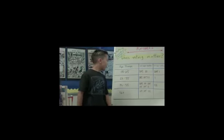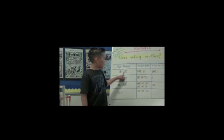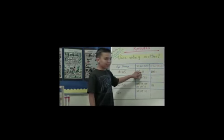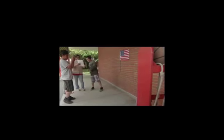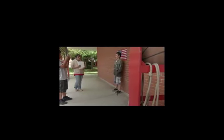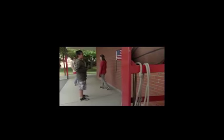Dimension three is about evaluating sources and gathering evidence to respond to the compelling question. So Gavin, would you go ahead and explain the data to us? In the age range 18 to 25, we had eight people say that voting does matter and six people say that it doesn't matter. The fourth and final dimension — probably the most exciting — is communicating conclusions and taking informed action to get out in the world and really make a difference.